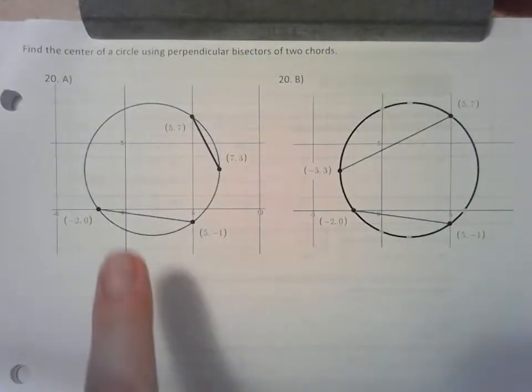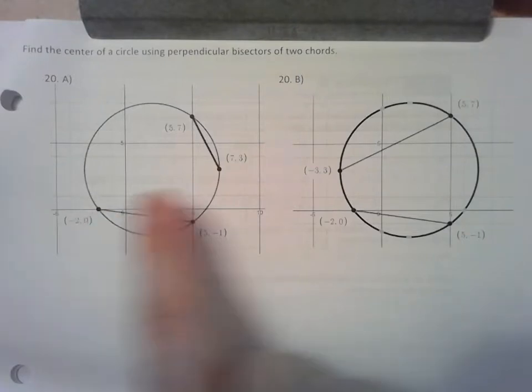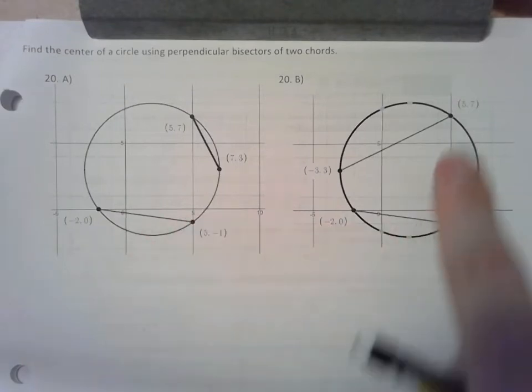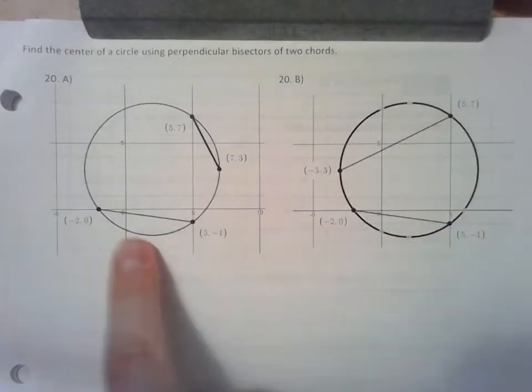So I'm going to do the first one, which is called 20a. 20b is actually the same circle, and it uses one of the same chords. What if we use a different second chord? You should come up with the same answer I get. You can practice that on your own.